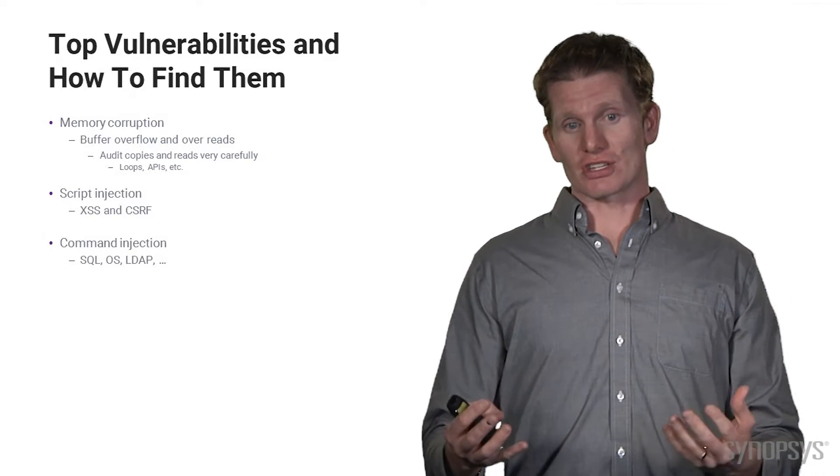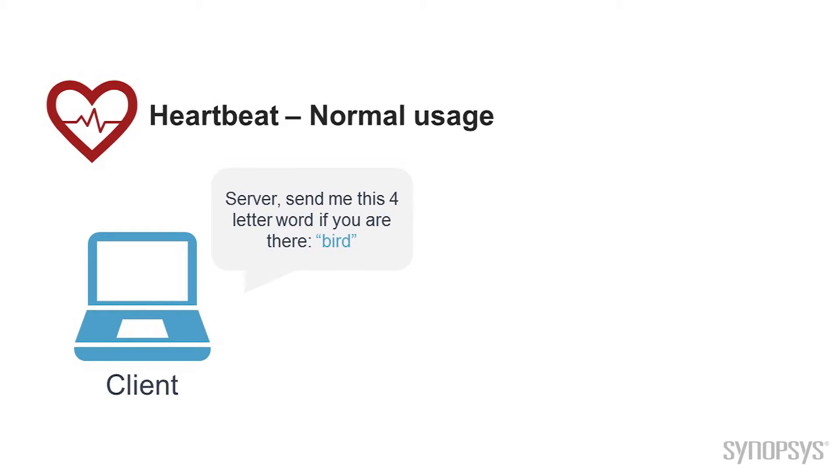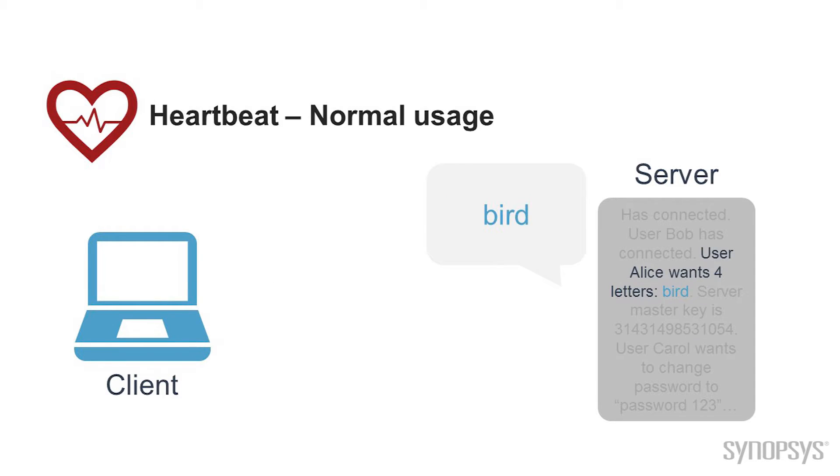Let me give you one more example before we dive into what static analysis really is and how it can help. This vulnerability is something that's very interesting. It's very near and dear to the heart of Synopsys. It's called the Heartbleed vulnerability. And it was a vulnerability that existed in OpenSSL. There was a feature for a couple of years that existed with a vulnerability that was unknown. It was a feature called the Heartbeat. And what it was is a client could talk to a server who had the vulnerability and say, hey, can you send me the four letter bird? And the server would say, yep, here's bird. So that's the normal usage of the Heartbeat.